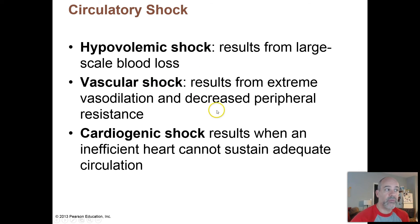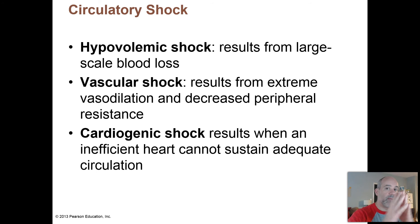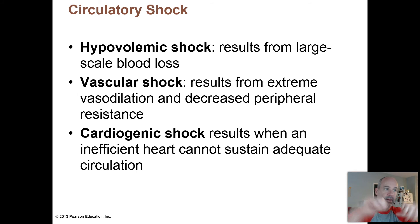Vascular shock occurs from things that cause extreme vasodilation. Peripheral resistance is one of the three things that determines blood pressure. If you have blood vessels that are dilated throughout the body all at one time, that's going to greatly lower your peripheral resistance, which is going to lower your blood pressure. If it's low enough, you'll go into shock from that.